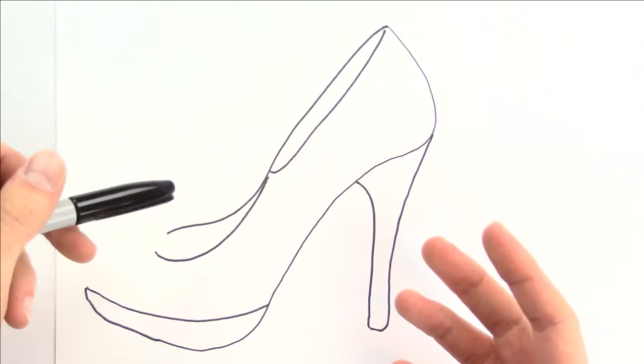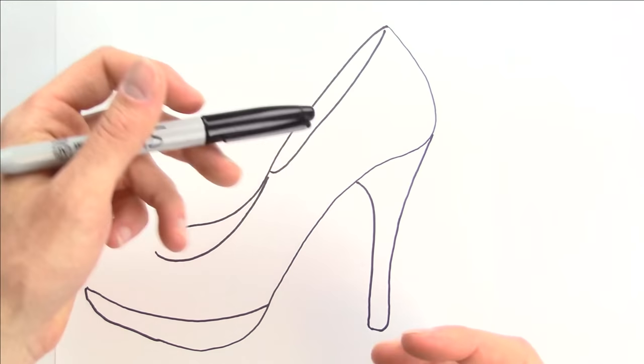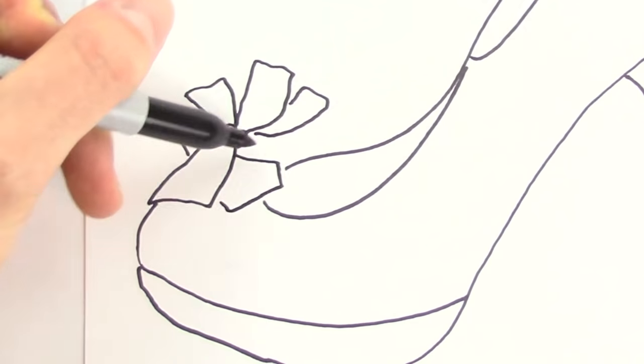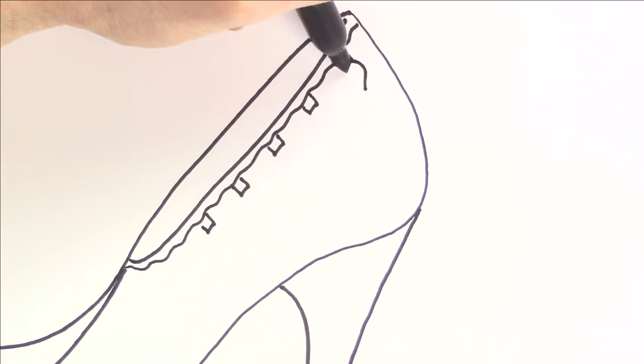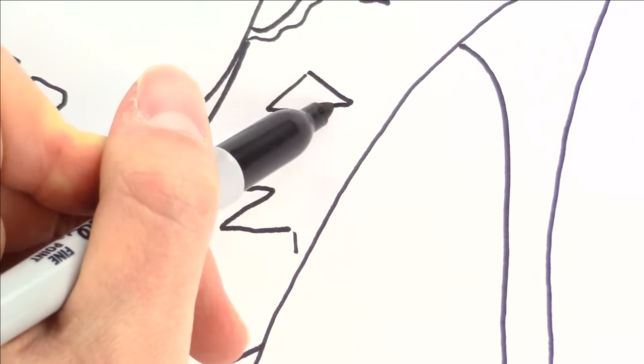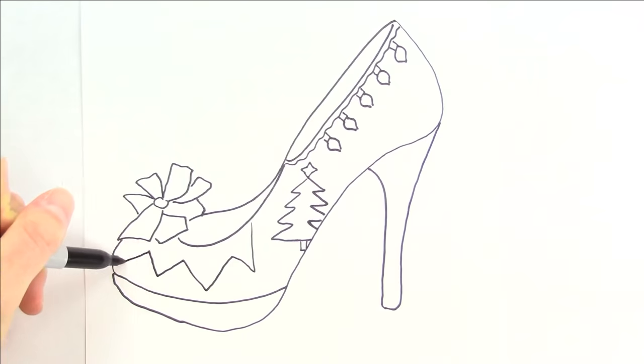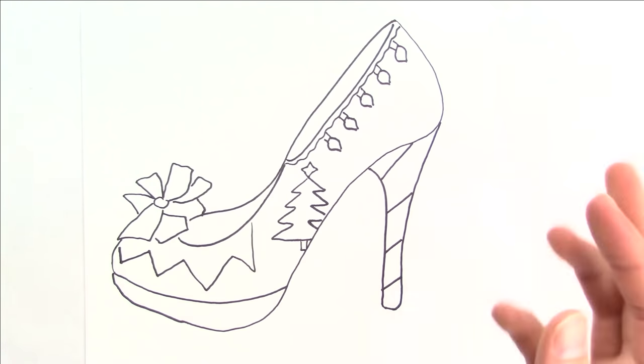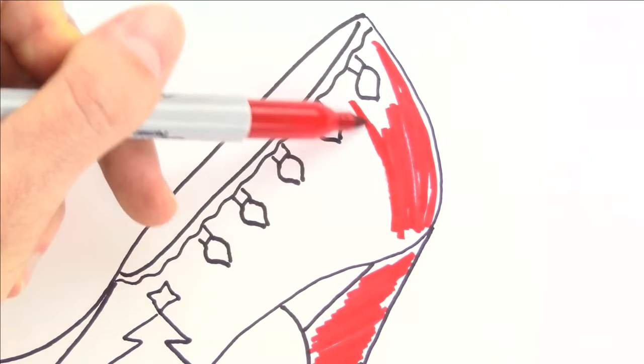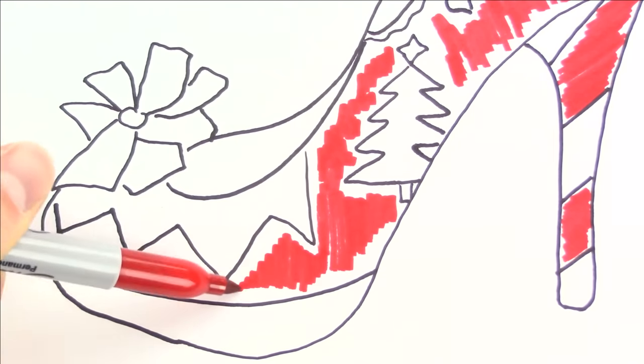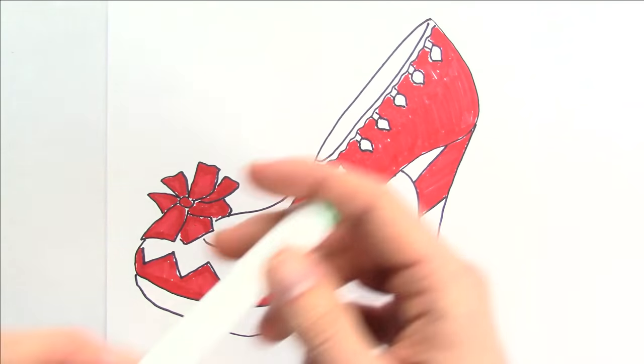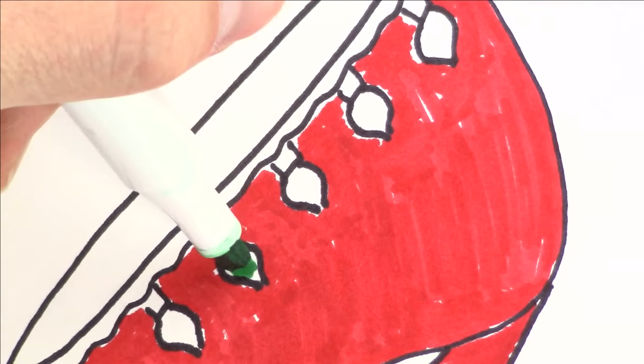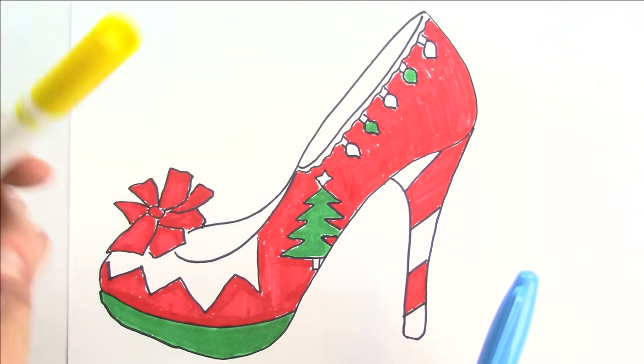Now I was thinking I could draw a Christmas bow on the front of the shoe, some lights along here, and maybe a Christmas tree somewhere in here. I think this should work. I just need to color it in, so I'm going to start with some red. Now I need a little bit of green down here and on the Christmas tree. Now just a little bit of yellow for the inside of the shoe and a little bit of blue.